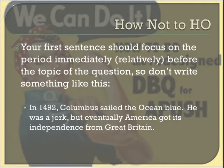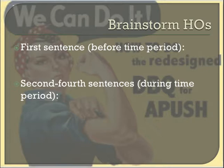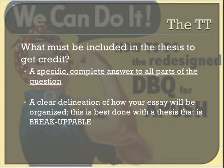Here's what to avoid: don't start every American history essay with 'In 1492, Columbus sailed the ocean blue.' That shows chronology but lacks substance, and actually makes you look worse. You need to be more specific. Your first sentence should show explicit knowledge of history. Avoid common or watered-down observations, and absolutely avoid the phrase 'throughout history.' Start your essay with something like 'Between the years...' Your first sentence covers before the time period; sentences two through four cover during the time period.